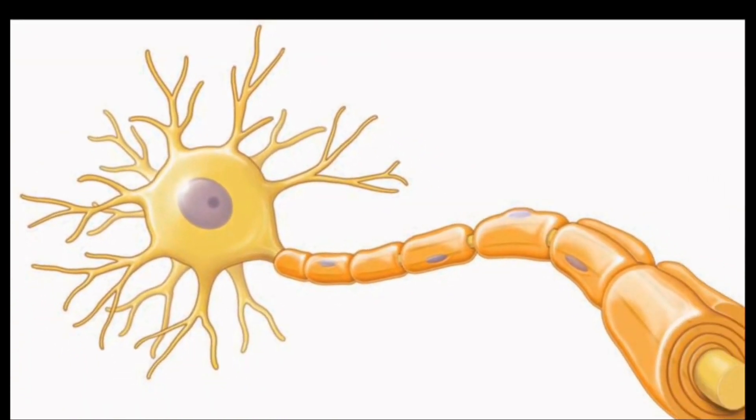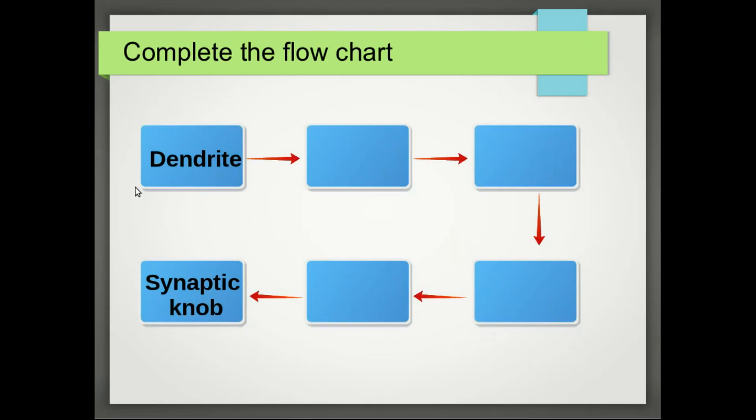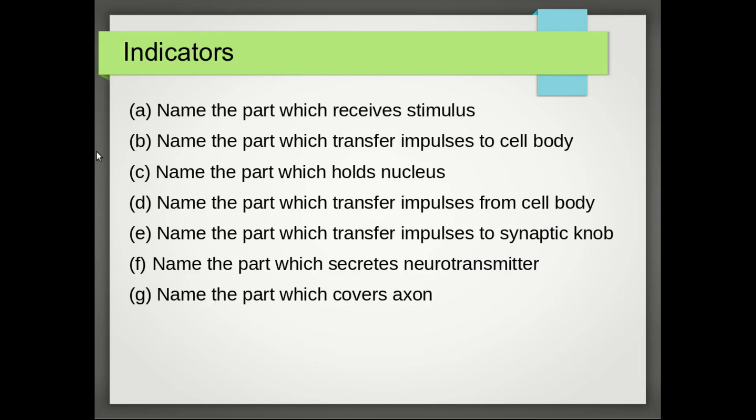So dear children, today we have learned about the structure of a neuron in detail. Now you have a small homework: complete the flowchart in the right order of the impulses passed through the parts of a neuron, and another one, draw the picture of a neuron and label the parts according to the indicators given in the screen.